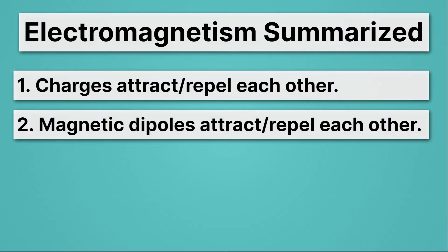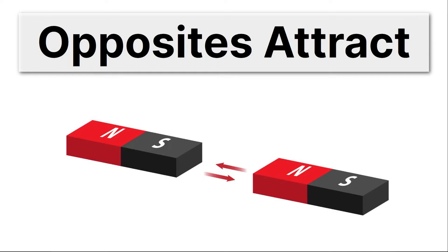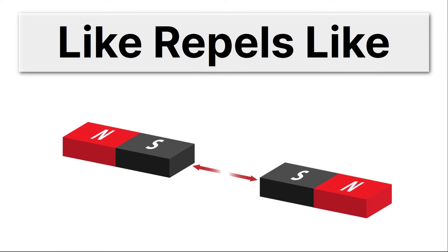The second principle is magnetic dipoles attract and repel each other. This is basically the same principle as number one, only applied to magnets. Again, opposites attract. So if I have two magnets, and the south and north pole are facing each other, they'll be attracted to each other. If the south poles are facing each other, then they'll be repelled. So like repels like.